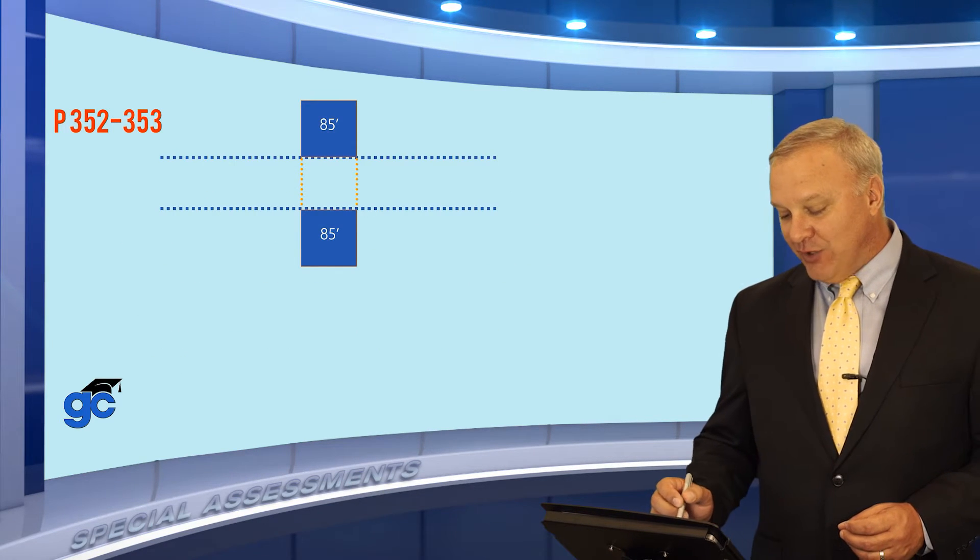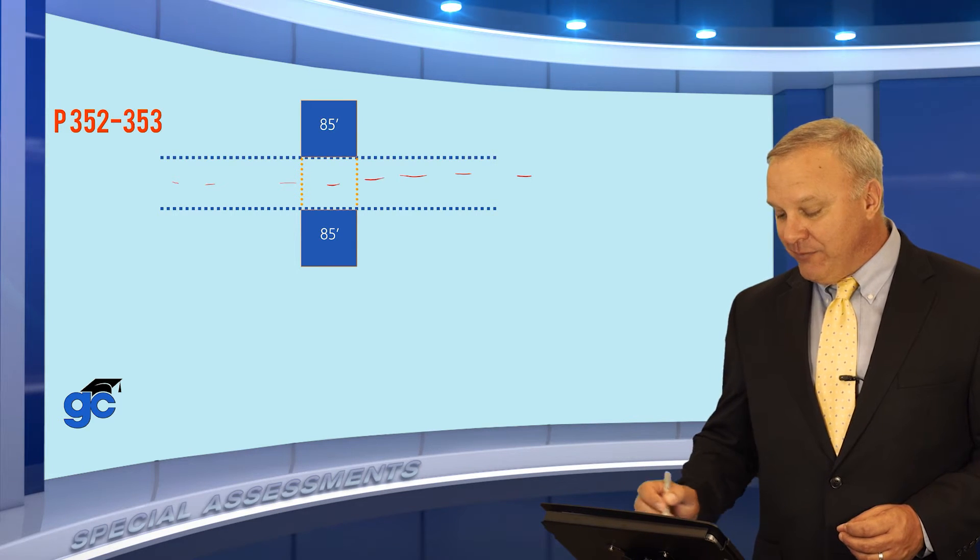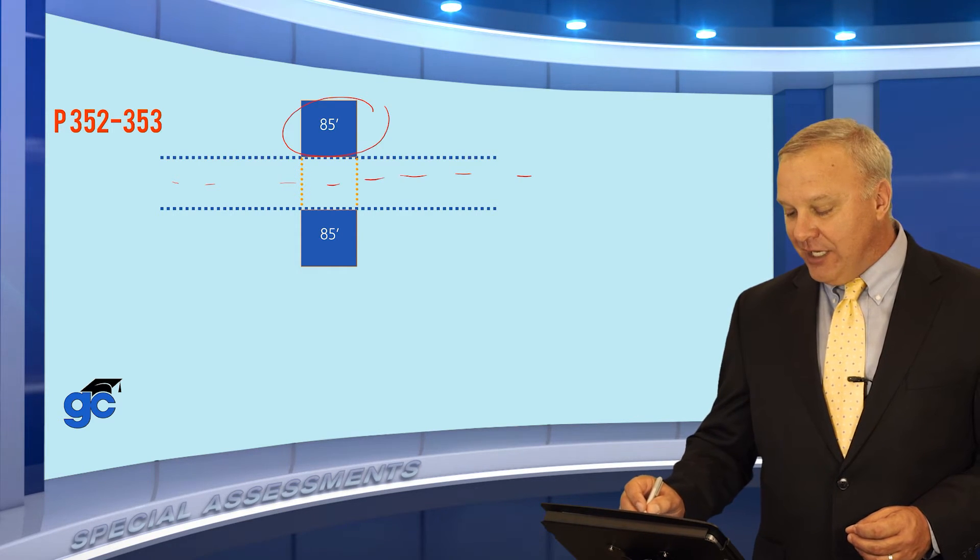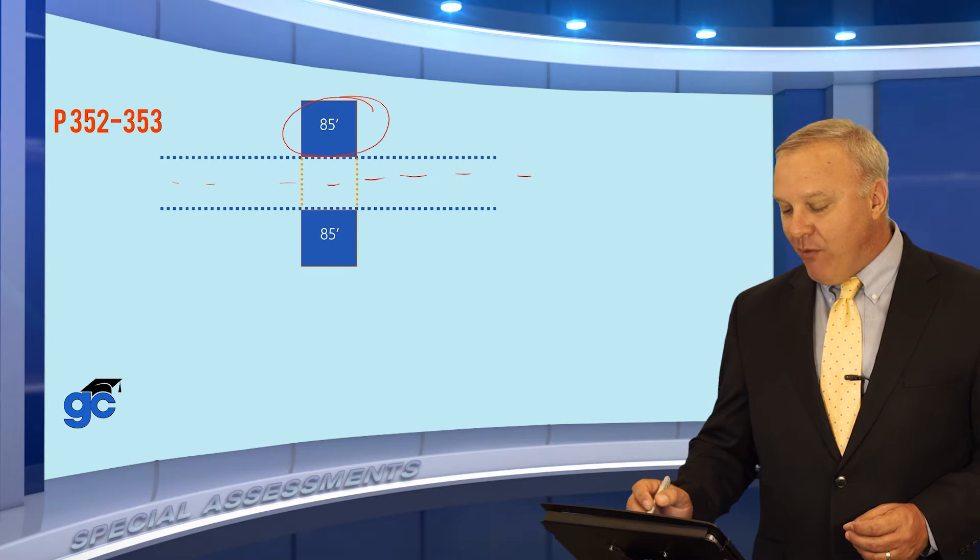First of all, here's our little street. I'll put the little lines down the middle of the road. We've got a lot on one side, and it says it was 85 by 150. Anytime you see that,